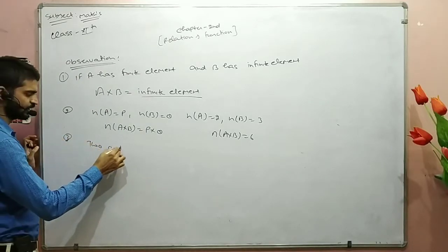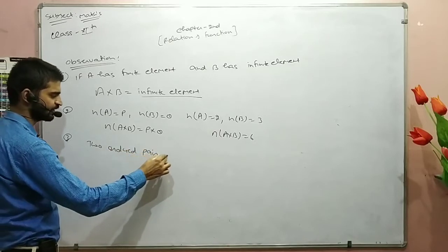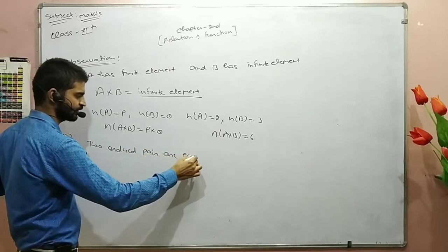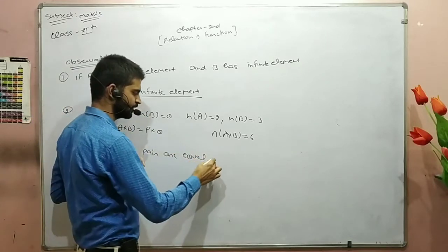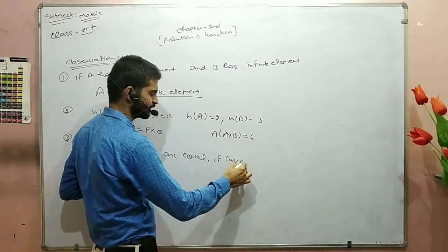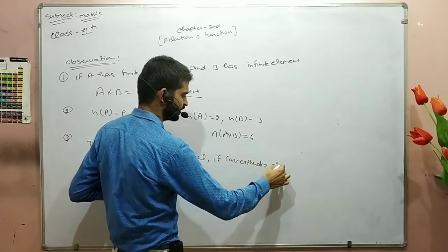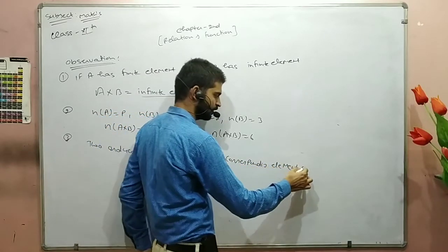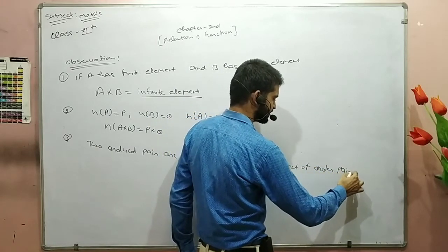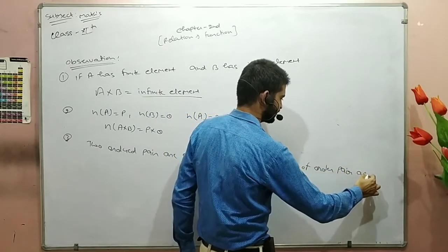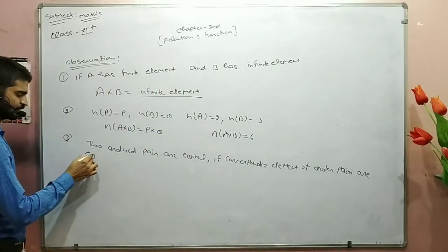Now let's discuss one more property. Two ordered pairs are equal if the corresponding elements of the ordered pairs are equal.